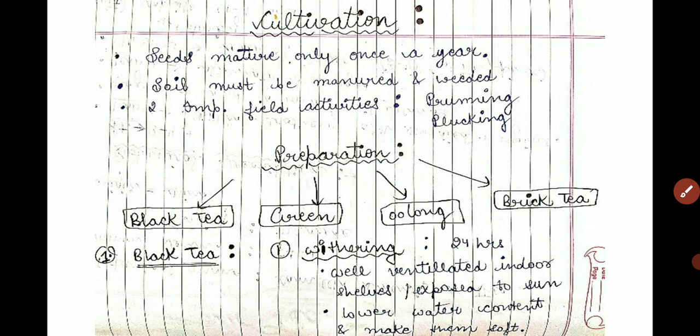Now we will talk about the cultivation. Tea seeds mature only once a year. The soil must first be manured and weeded before planting the seeds. In the field, two important activities are pruning and plucking, which help get good growth.